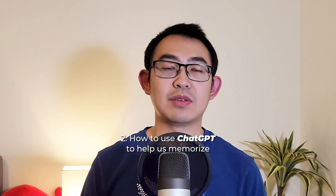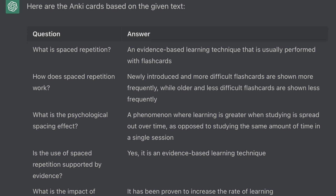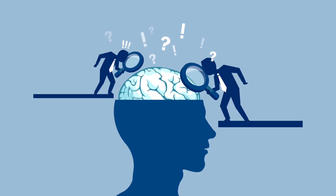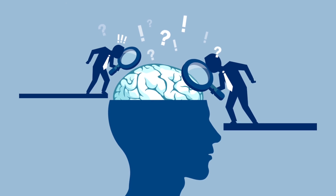Now let's move on to number two: how to use ChatGPT to help us memorize. The best way to memorize is definitely using Anki flashcards, and you can use ChatGPT to help you create them, saving a lot of time. However, I'm a big believer in creating your own cards, because when you do, a lot of learning happens — you apply cognitive load which helps you understand concepts.